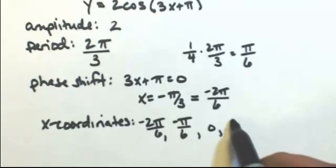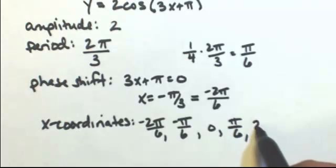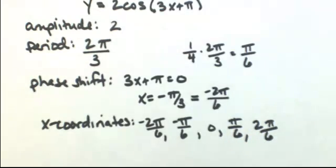0 pi over 6, 1 pi over 6, 2 pi over 6. So those are my x-coordinates.